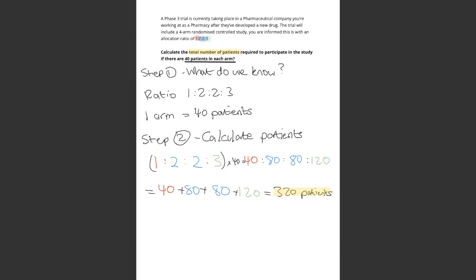The ratio is 1, 2, 2, 3. One arm is 40 patients. So it's 40, 80, 80, 120.